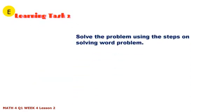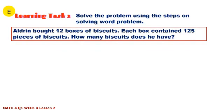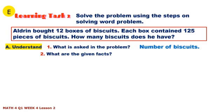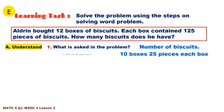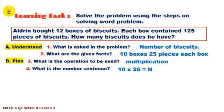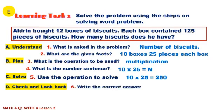Learning Task 2: Solve the problem using the steps for solving problems. Adrian has 12 boxes of biscuits. Each box contains 125 pieces of biscuits. How many biscuits does he have? Understand what the problem is asking. What are the given facts? Plan: what is the operation to be used? What is the number sentence? Solution: use the operation to solve — 12 × 125 = 1,500. Check and look back. Write the correct answer: 1,500 biscuits.